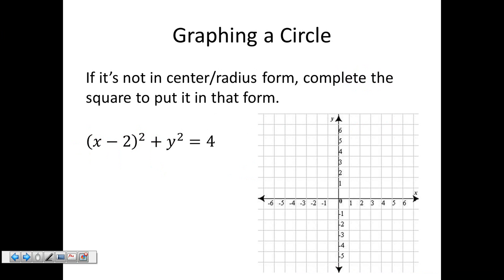Now let's talk about graphing a circle. If it's not in center radius form, complete the square to put it in that form. It's much easier to graph in center radius form. This one is already in that form. I see x minus two, so this two is my x coordinate for my center. I don't see anything with the y, so I assume it's zero. My center is at the point two zero.